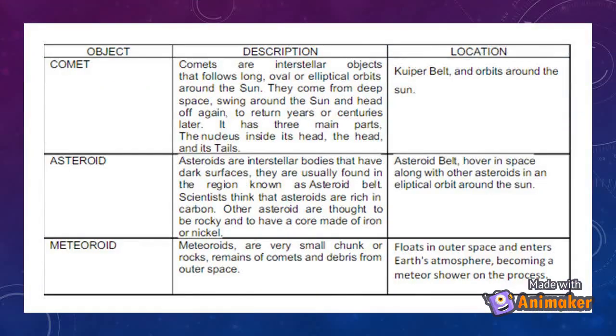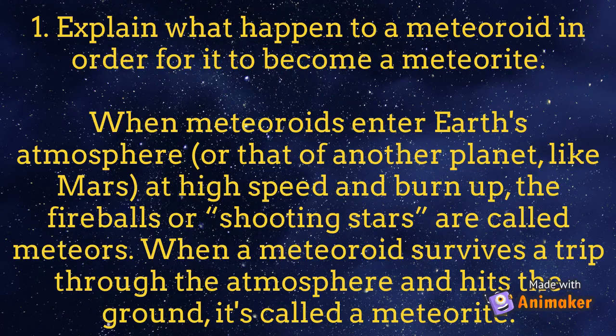Learning Task Number 2: Complete the table and answer the following portions. Number 1: Explain what happened to a meteoroid in order for it to become a meteorite. When meteoroids enter Earth's atmosphere or that of another planet like Mars at high speed and burn up, they are called meteors or shooting stars. When a meteoroid survives the trip through the atmosphere and hits the ground, it is called a meteorite.